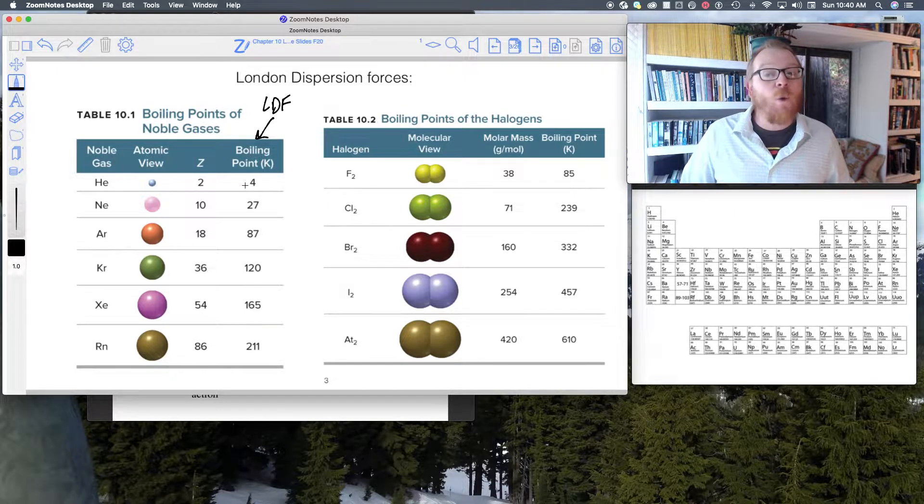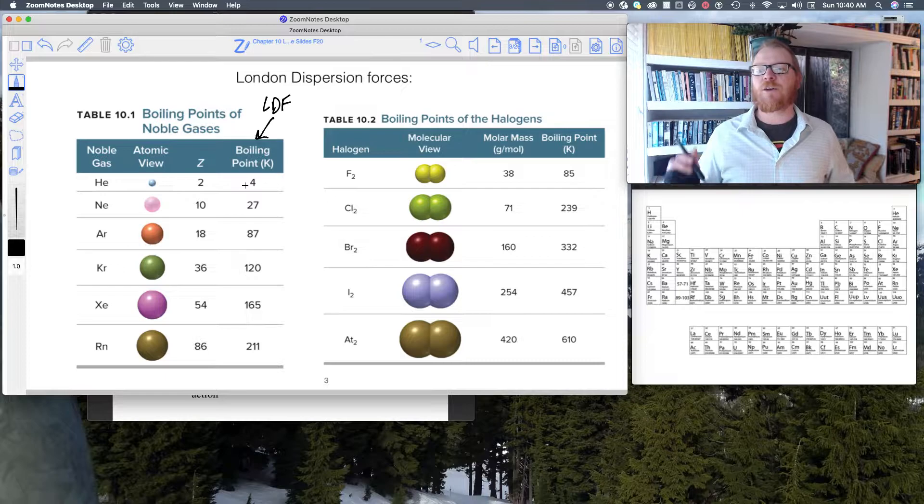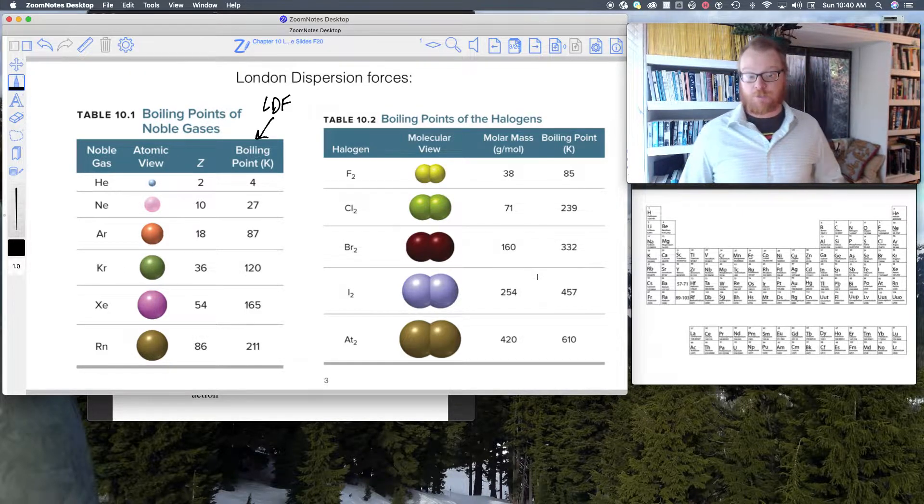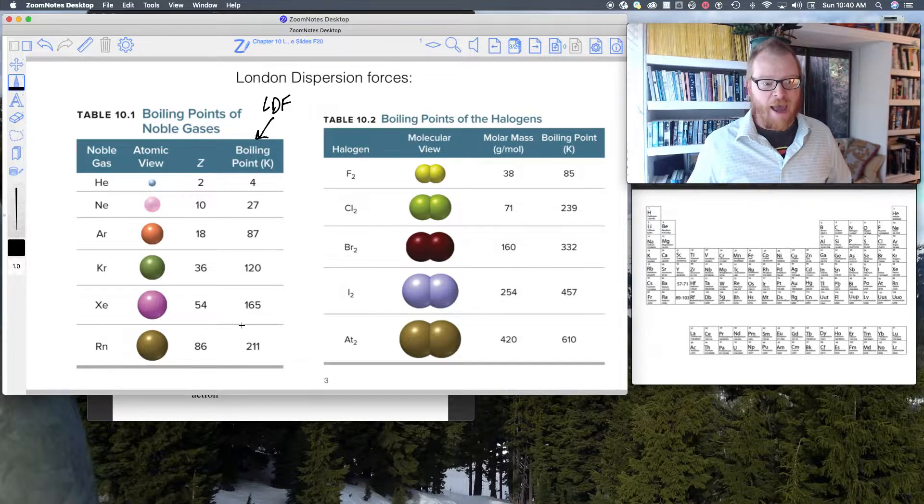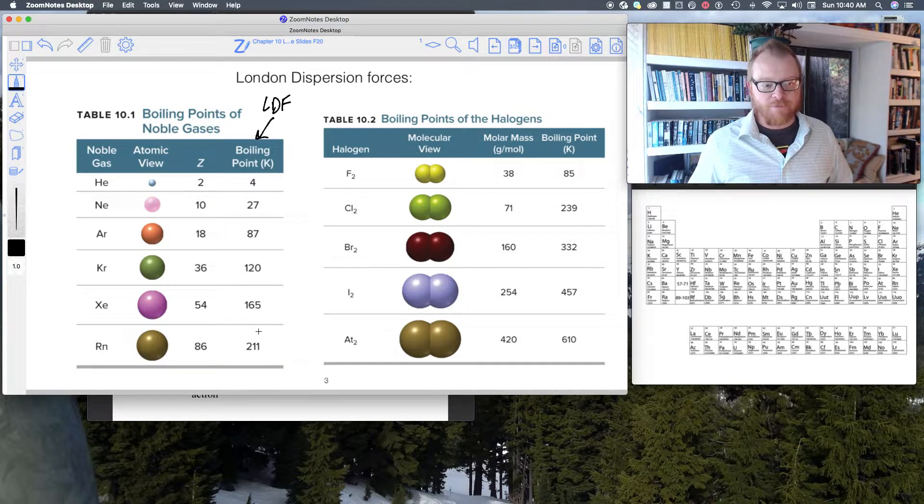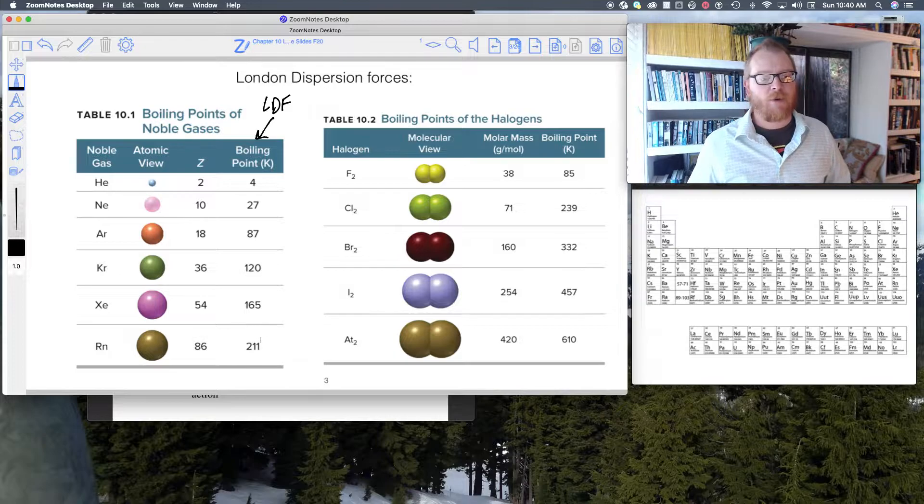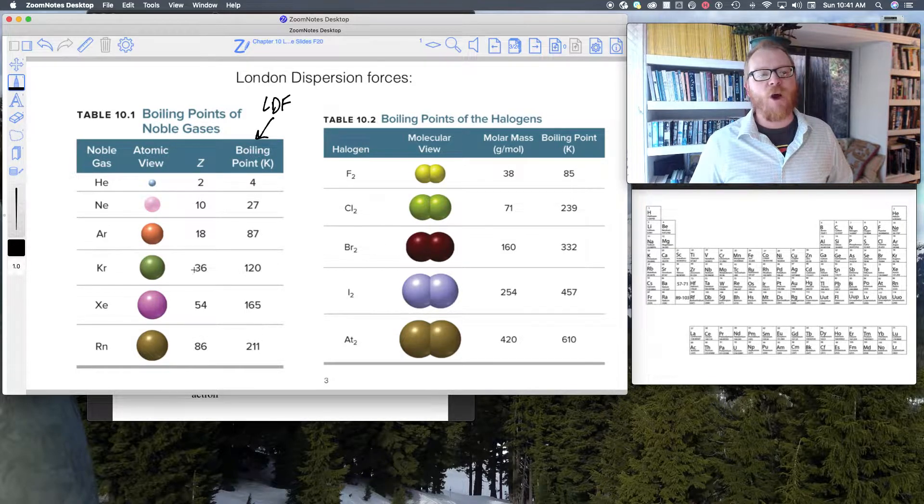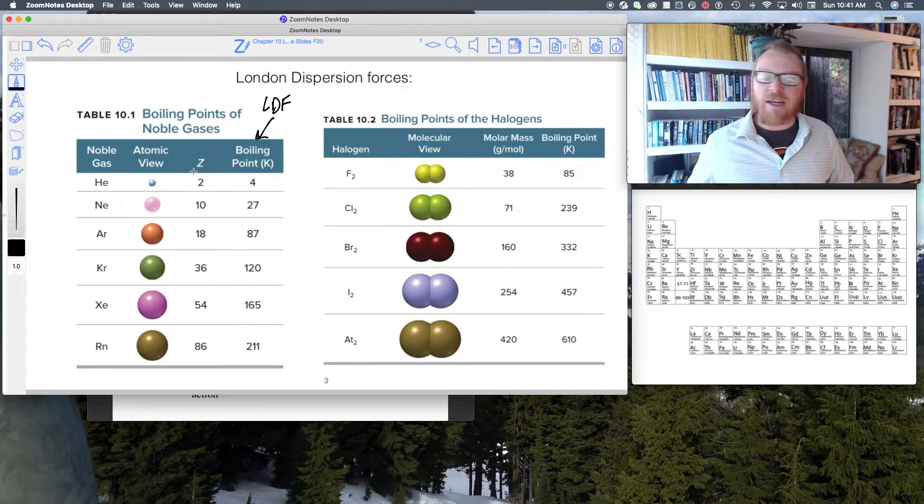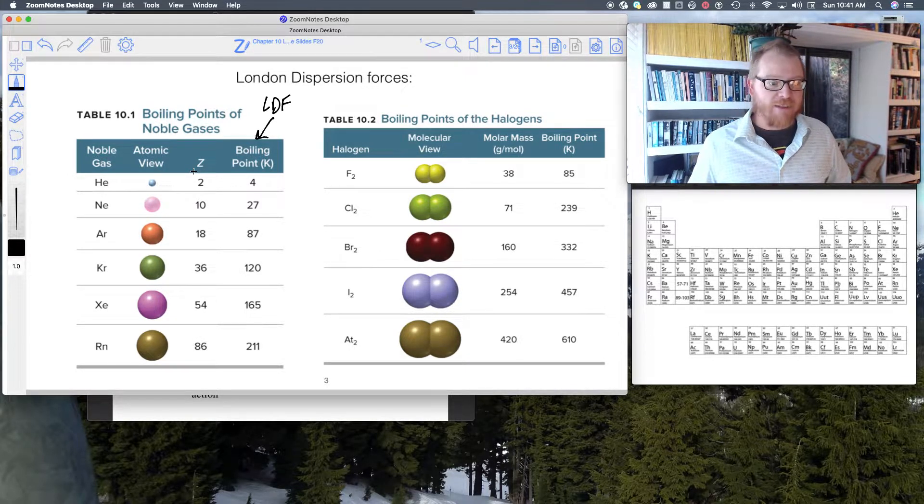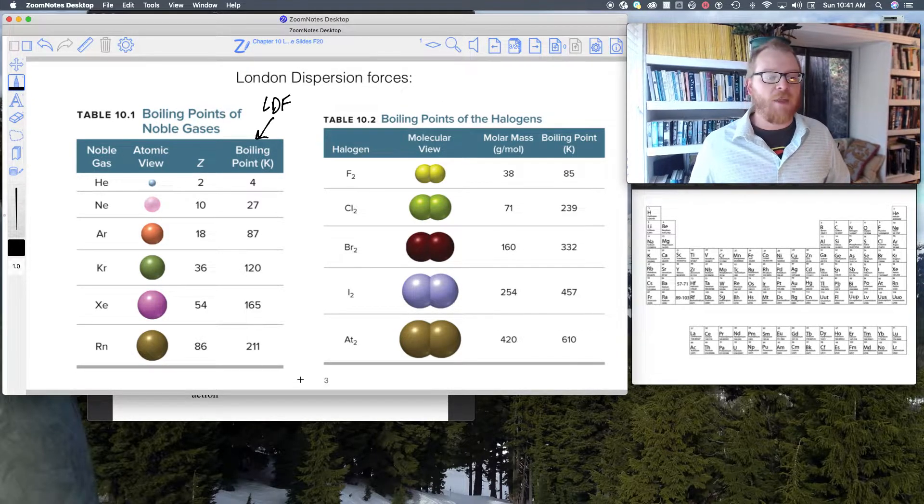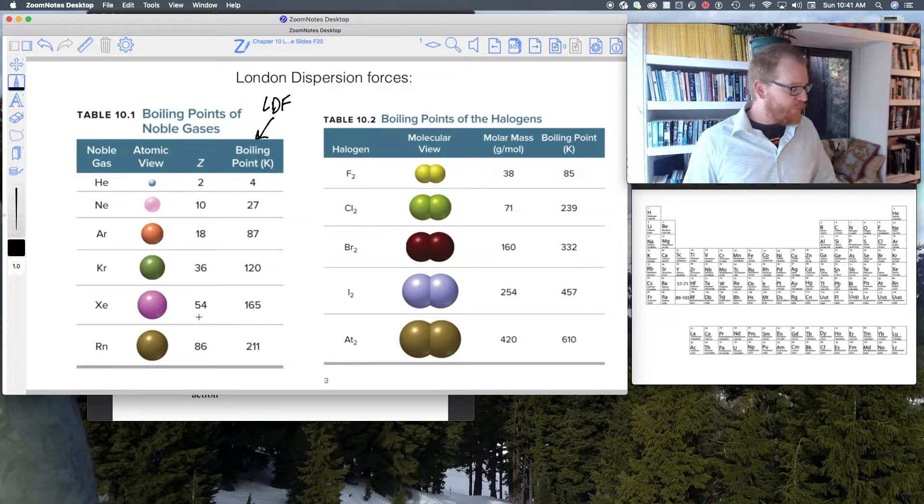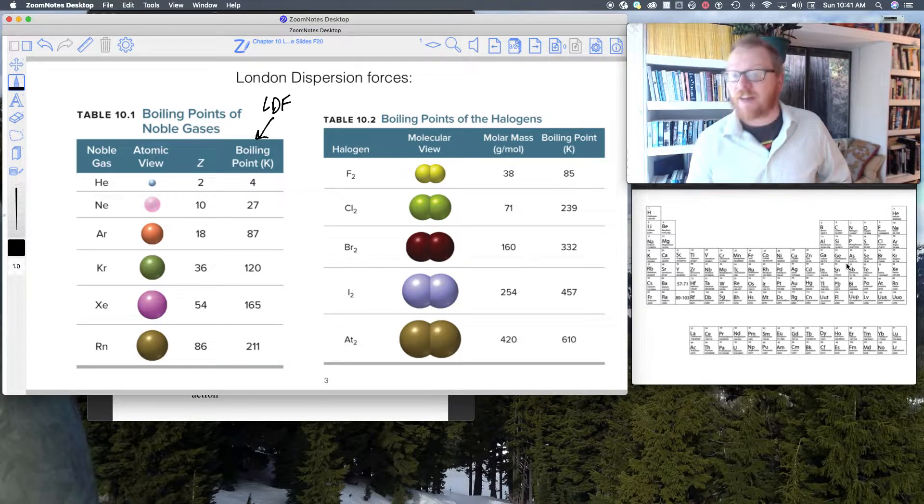Above 4 kelvin, helium is a gas. You have to cool it down very low to 4 kelvin to get it to liquefy. That means helium has very weak London dispersion forces. However, if we go all the way up to xenon or radon, look at this, the boiling point is humongous. Z, that's our nuclear charge, tells us how many protons it has.